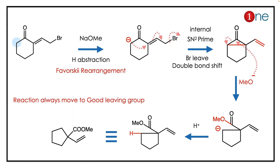By looking at the structures, you might guess it's a Favorskii rearrangement. Favorskii rearrangement starts with abstraction of the alpha proton. Since you are using a base, the base abstracts the proton and you have anion formation.